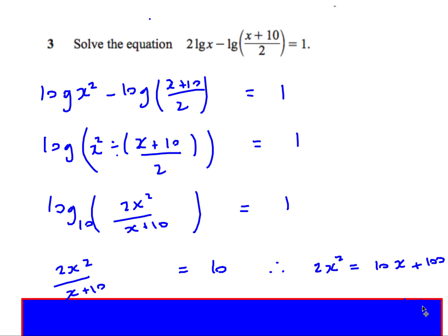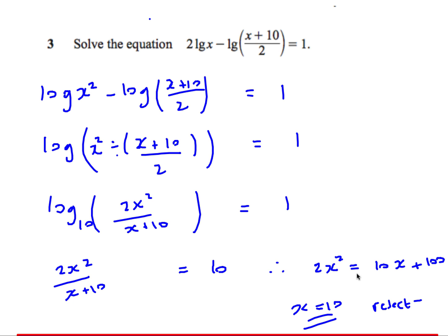Since log base 10 of something equals 1, that means 10¹ = 2x²/(x+10), so 2x²/(x+10) = 10. This gives a quadratic with two solutions. We reject any negative solution because you can't take the log of a negative number, so the answer is x = 10.